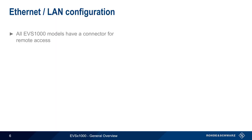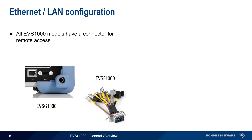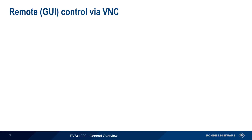All versions of the EVS have a LAN connector which can be used for remote access. On the EVSG, an Ethernet connector is located on the rear of the instrument. On the EVSF, the fan-out connector contains an Ethernet jack as well. EVS-D models use wireless LAN for their network connection. In all cases, either fixed or dynamic IP addresses can be configured. Once a LAN connection has been configured, the EVS graphical user interface can be both viewed and controlled via VNC, a widely used, free application.